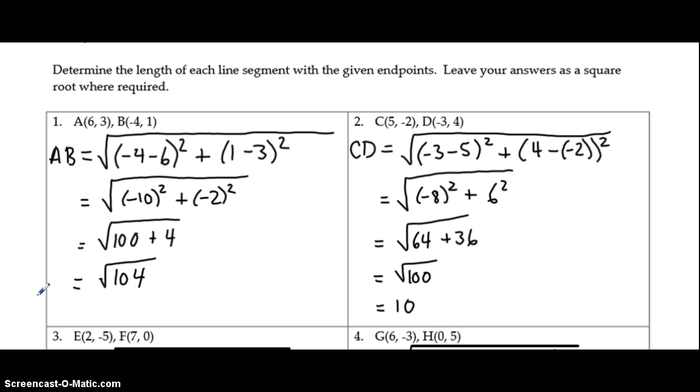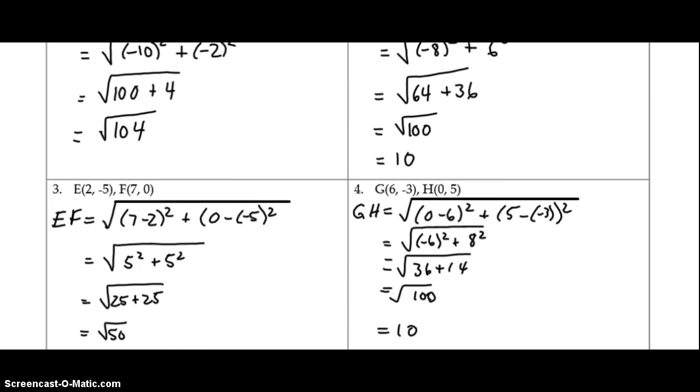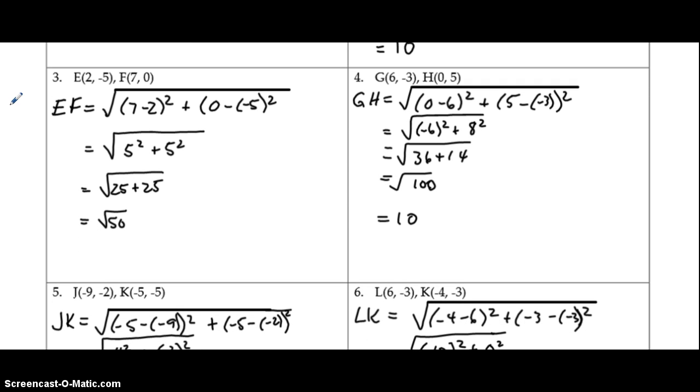Alright, so you paused the video, got those questions done. Now let's see how you did. So question number 3, you should have gotten the square root of 50. Question 4 is 10. Now if you got those wrong, feel free to pause the video on this spot right here so you can follow through and check where your answers are incorrect.